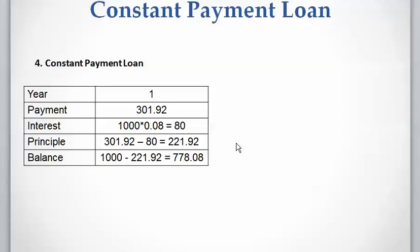Next, we calculate the interest and principal portion of each $302 payment. For Year 1, the interest is the balance multiplied by the interest rate: $1,000 × 8% = $80. The principal portion is $302 − $80 = $222. The remaining balance is $1,000 − $222 = $778.